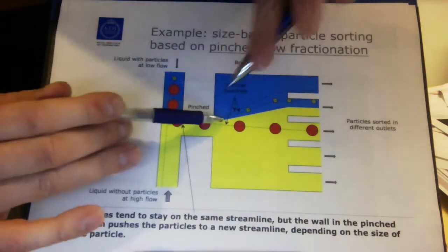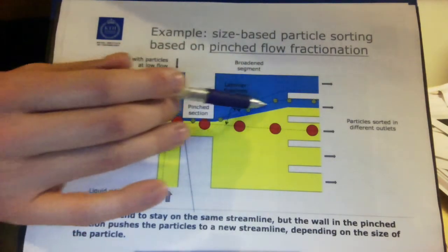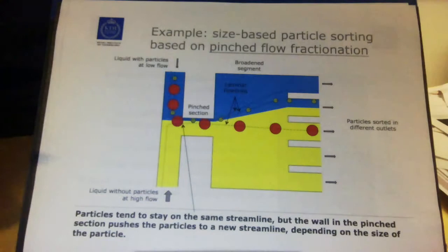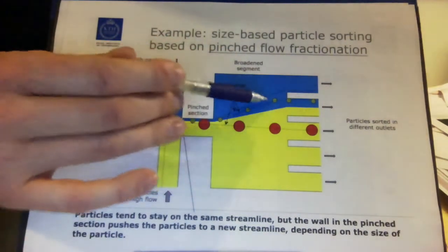And this new streamline is very close here, but as the liquid here suddenly expands, you see now clearly that all the green particles have been pushed to a new streamline which is laying here. So all the green particles will now be moved from their original streamline to a nearby streamline here.